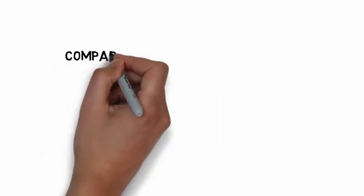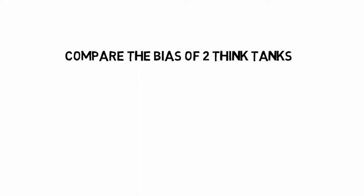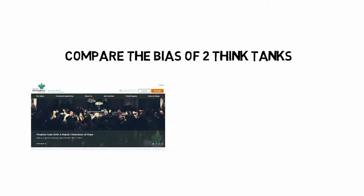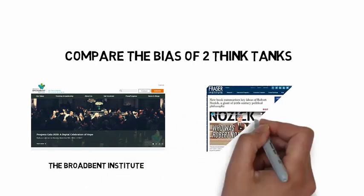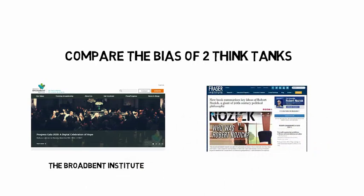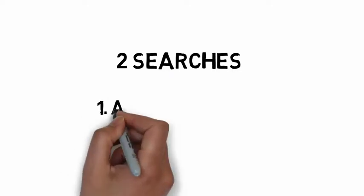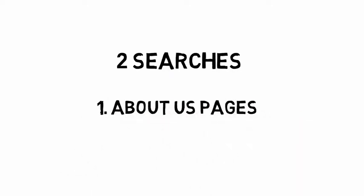Let's take the example of two Canadian think tanks: the Broadbent Institute and the Fraser Institute. Both are influential research organizations that contribute to the development of Canadian society. But they have very different biases or points of view, and thus the information that they produce may very well have a different purpose. To assess purpose and therefore bias, we will start with two searches.